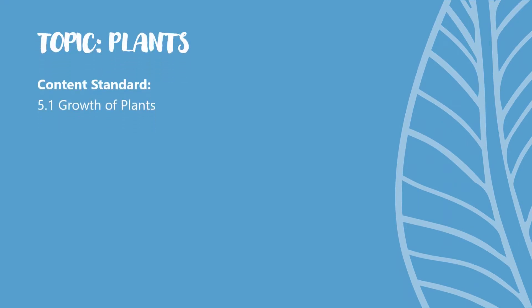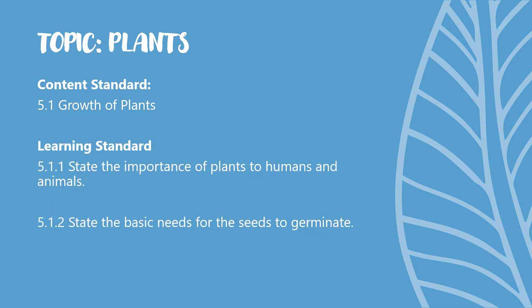Our topic is plants. Content standard 5.1: growth of plants. Learning standard 5.1.1: state the importance of plants to humans and animals. 5.1.2: state the basic needs for the seeds to germinate.